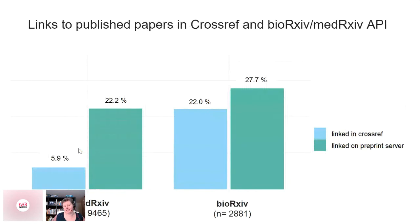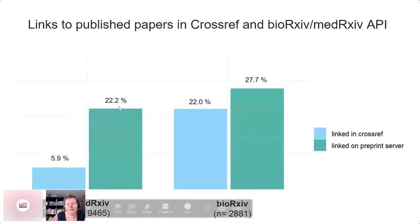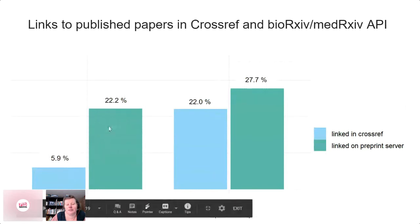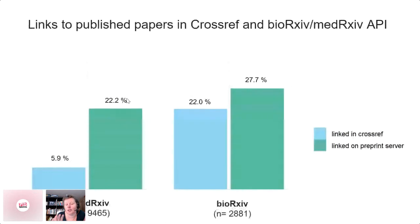When you flatten this and look at the total percentage, for BioArchive it's only a slight increase. But for MedArchive, 22% of preprints on the platform have links to the published paper, and only 6% in the metadata.